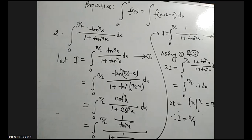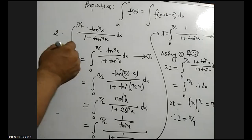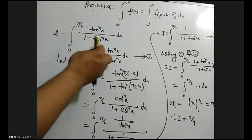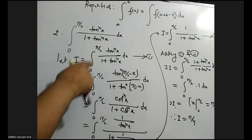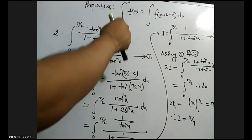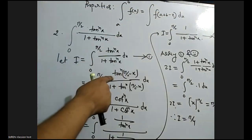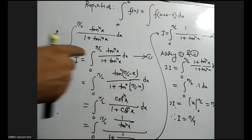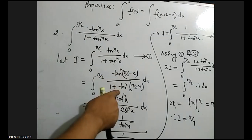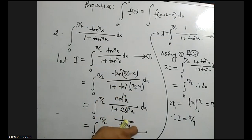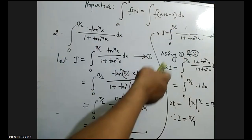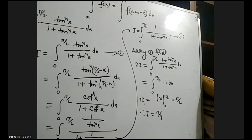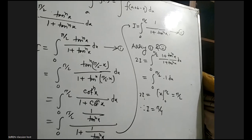Now similarly, the second definite integral — problem 2: the integral from 0 to π/2 of tan to the power n of x divided by 1 plus tan to the power n of x, dx. Using the property, x becomes π/2 minus x. Tan transforms to cot, and cot becomes 1 over tan. Taking LCM in the denominator gives 1 divided by 1 plus tan to the power n of x. Adding the two equations gives the same result, i equals π/4.